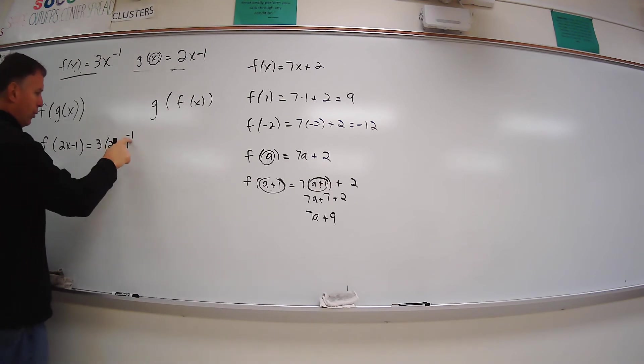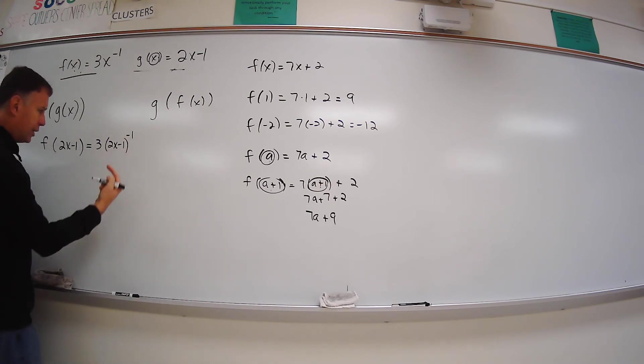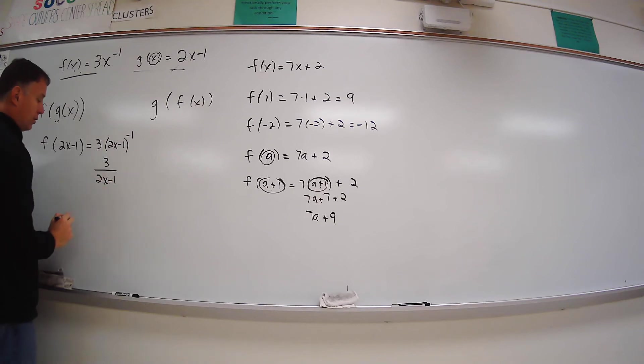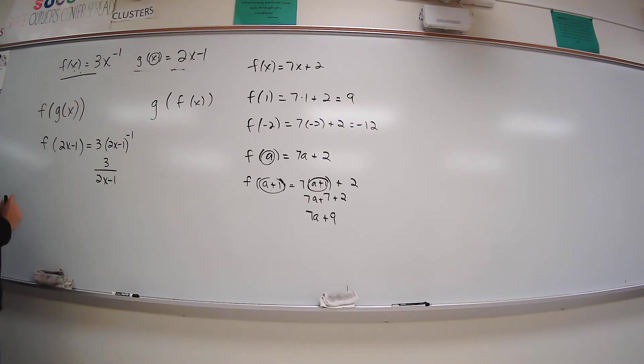Now, negative 1 power means it goes down bottom. The 3 is not attached to that. So the 3 stays on top, and then I have 2x minus 1 here. Let's look at our domain here. Let's look at our domain and let's consider what's going to happen here.